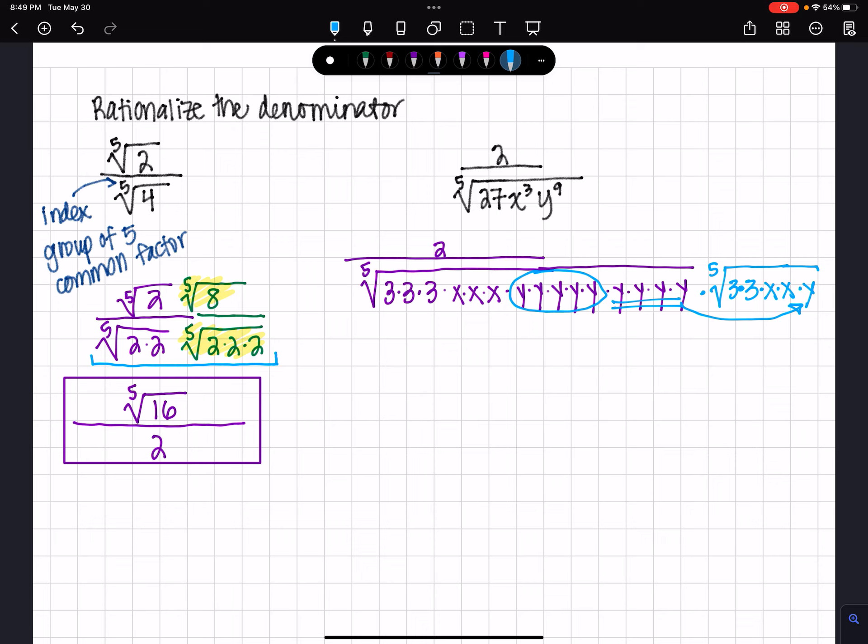Now, if I multiply the denominator by the 5th root of 9x squared y, I need to multiply the denominator by the same thing as I'm multiplying the numerator by, so that I have, again, a factor of 1.